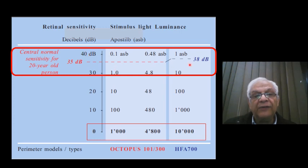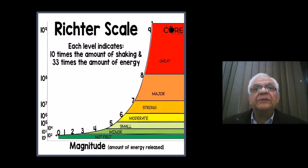That is why you have a difference here in the normal sensitivity of the same person between the Octopus and the Humphrey. Let's consider the Richter scale for earthquakes.